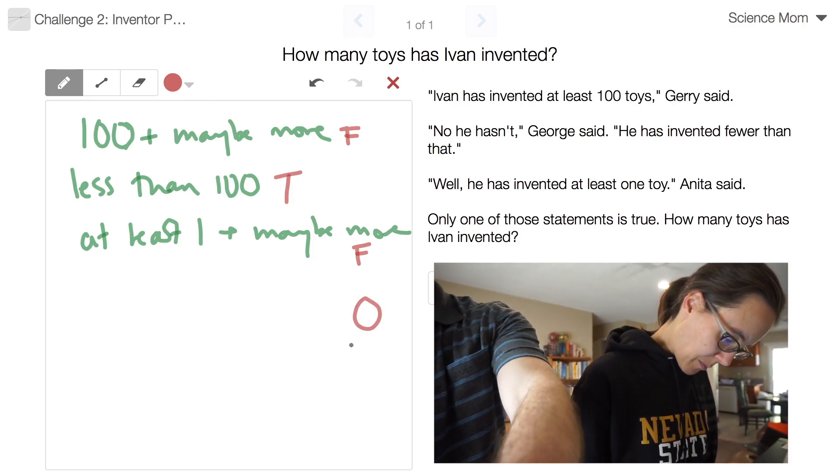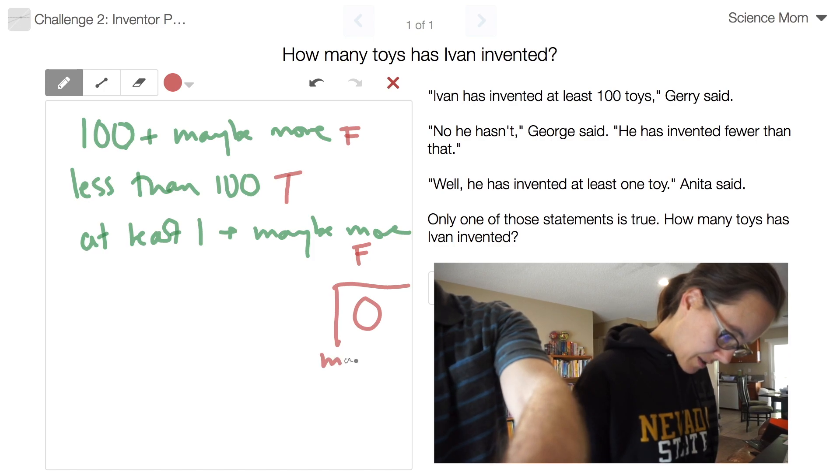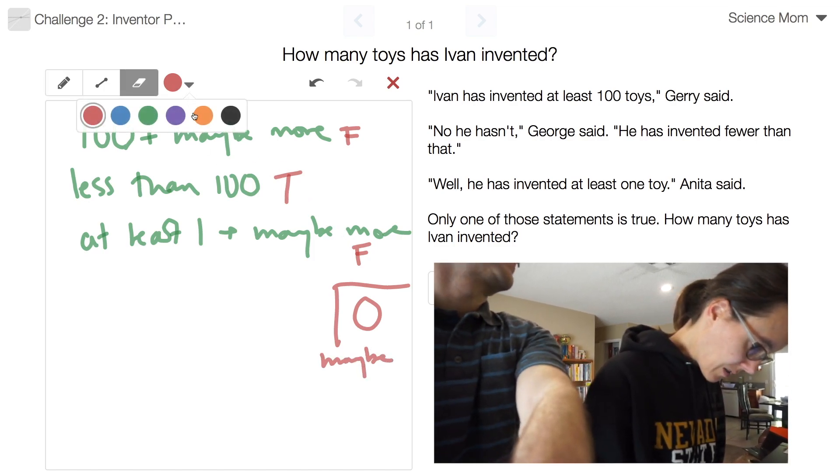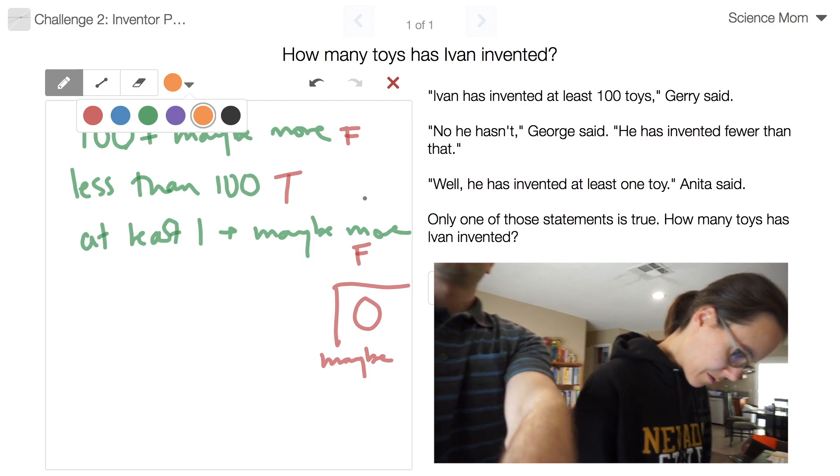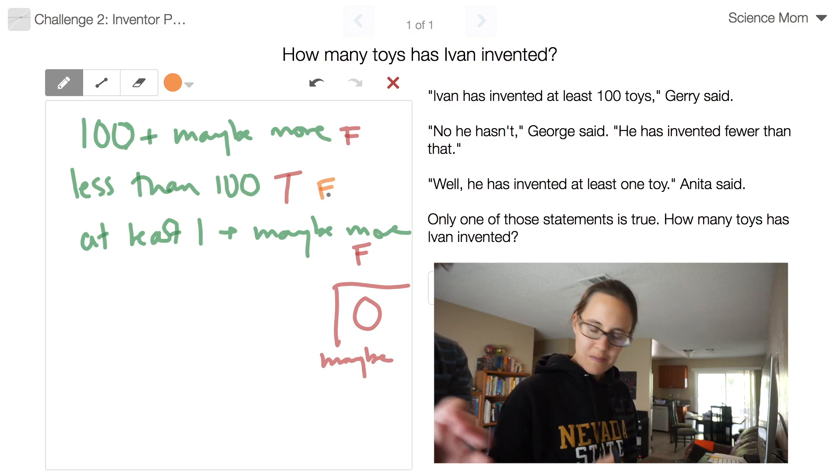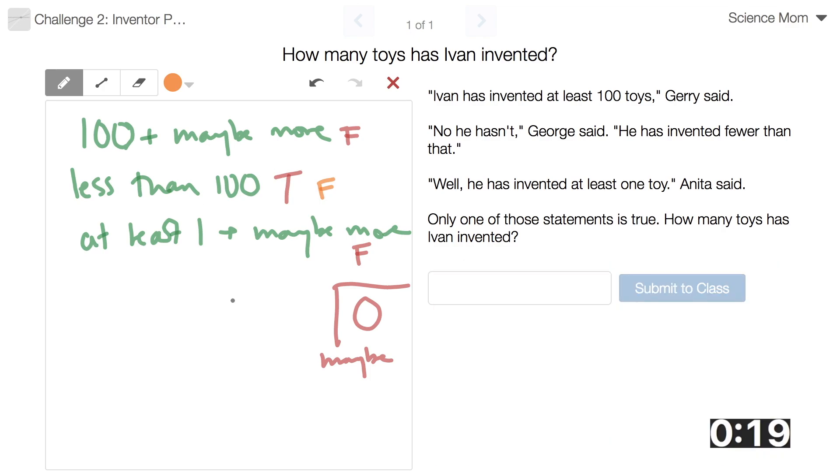And less than is true does not give us an exact number of toys unless it's zero. So I'm going to write maybe zero for that one. And now let's try a different assumption. What if less than 100 is false? Okay, that means he has to have more than 100, which would mean that both of those would have to be true, which can't happen.